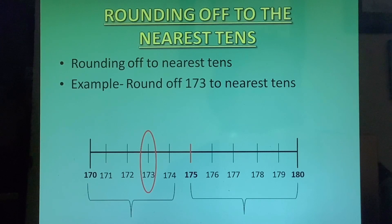Now 175 being the center number is equidistant from both corners. But the center number is always grouped in the second group. That is it is always rounded off to the upper limit. Had it been 175 it would have rounded off to 180.